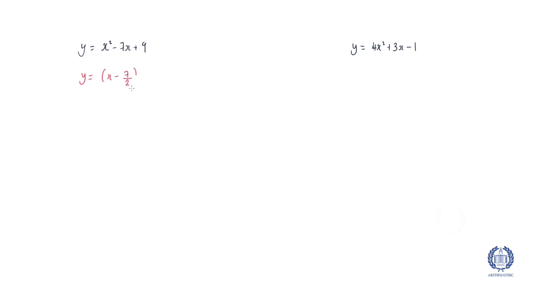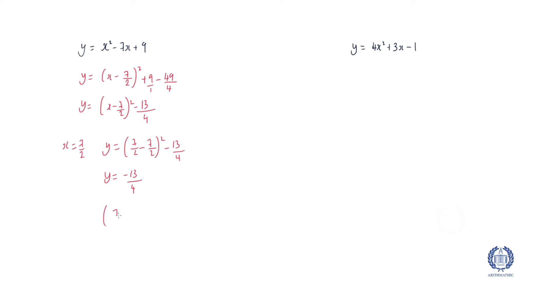So if we're going to find a turning point for this, we're going to do y equals x squared becomes x — we're halving 7. So you should get 7 over 2, whole thing squared, plus 9, and then minus the square of 7 over 2, which is 49 over 4. So then it's y equals x minus 7 over 2 squared. If we put that in the calculator, that gives 9 minus 49 over 4, which is minus 13 over 4. My x value has to be 7 over 2 — the opposite of minus 7 over 2 — to get that to zero. So y equals minus 13 over 4. My turning point should be 7 over 2 and minus 13 over 4. That's what you should have got.